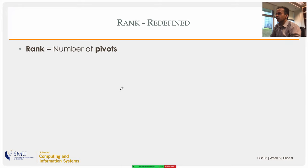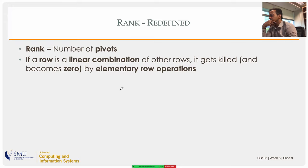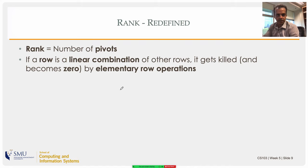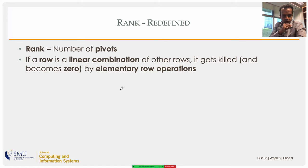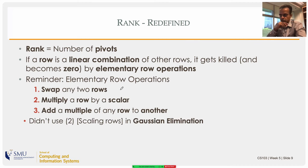The rank was originally defined as the number of pivots in the REF. If a row is a linear combination of other rows, it means that row can be obtained by algebraic manipulations of other equations — so during row operations it will become a zero row and get pushed to the bottom. Every non-zero row will have a pivot, so the number of pivots equals the number of linearly independent rows.